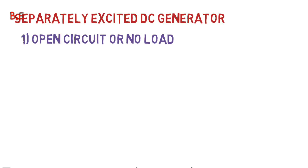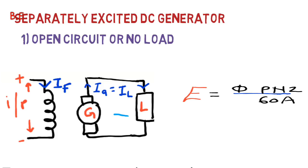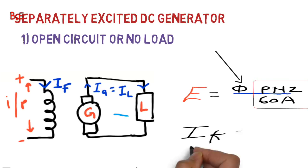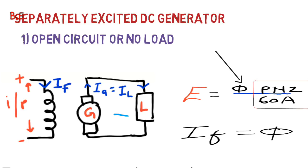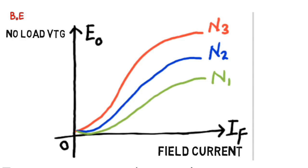First is the separately excited DC generator on open circuit or no load characteristic (OCC). The generator is tested on no load condition to check its performance. The induced voltage equation is E = 5pNZ/60A, where P, N, Z, and A are number of poles, speed, number of conductors, and parallel paths. These are constant, but flux can be varied by changing the field excitation. The OCC is plotted between no load induced voltage and field excitation.